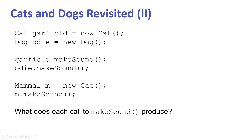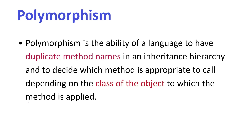Polymorphism is the ability of a language to have duplicate method names in an inheritance hierarchy and to decide which method is appropriate to call depending on the class of the object to which the method is applied. In our hierarchy, makeSound is defined for Mammal, Cat, and Dog. Which version runs depends on the actual class of the object.